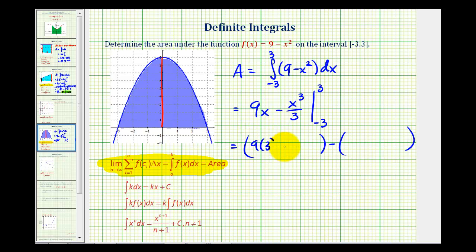So we'll first replace x with three, so I'll have nine times three minus three cubed divided by three minus the quantity nine times negative three minus negative three cubed divided by three. So we'll have twenty-seven minus nine, minus negative twenty-seven. This is going to be negative nine, but we're subtracting it, so it's plus nine.